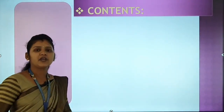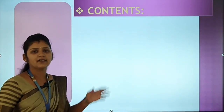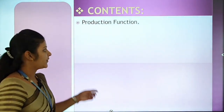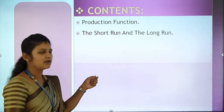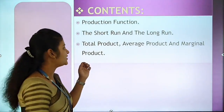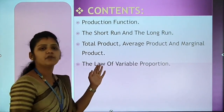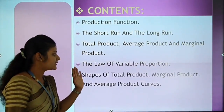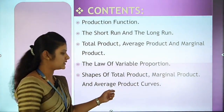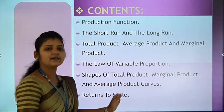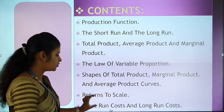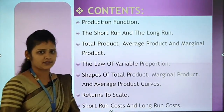In this third chapter, we are going to cover these topics: the first one is production function; the second is the short run and the long run; the third is total product, average product, and marginal product; next, the law of variable proportion; then the shapes of total product, marginal product, and average product curves; then returns to scale; and lastly, short run cost and long run cost.